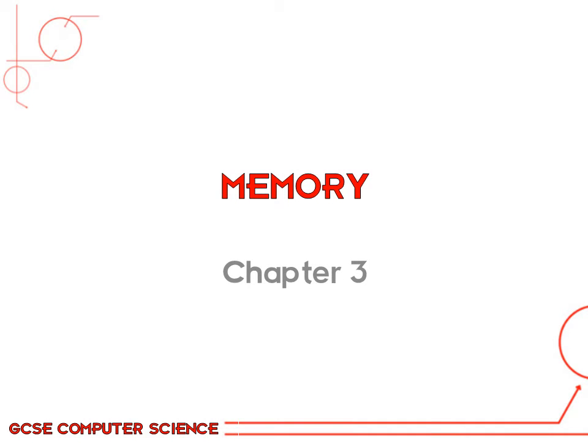When learning in chapter 2 about the CPU, we kept mentioning memory. You've learned about registers and cache, and in chapter 1 we mentioned RAM briefly. In this chapter we'll be looking at RAM, ROM and virtual memory.